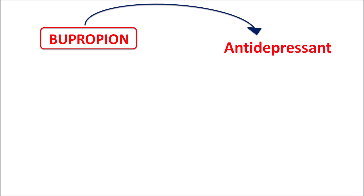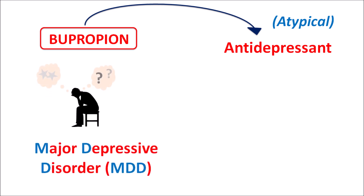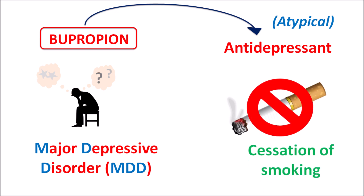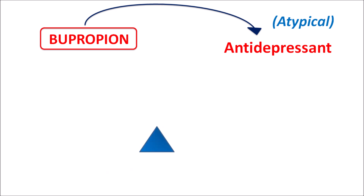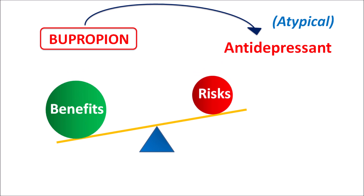Bupropion is one of the antidepressant drugs. This drug is classified as an atypical antidepressant, which indicates that it has somewhat fewer side effects compared with typical agents. Being an antidepressant, bupropion is indicated for the treatment of major depressive disorder and can also be used in the management of cessation of smoking, as it reduces withdrawal effects. The use of this drug depends on the balance between the benefits as well as the risks.